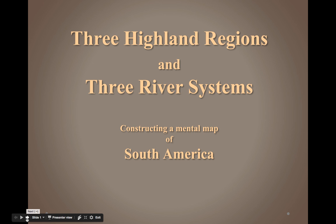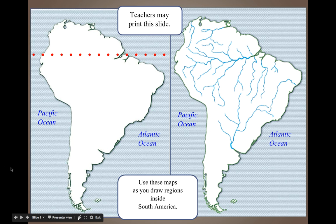Welcome to a series called 'Constructing a Mental Map.' In this case, we're talking about South America. We need to be looking for three highland regions and three river systems found in South America, and we're going to create our map. You're going to use the map that you have — particularly the one to the right — to help construct this mental map. Label, circle, and draw on it when instructed.